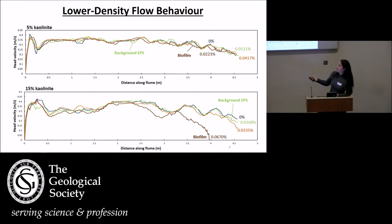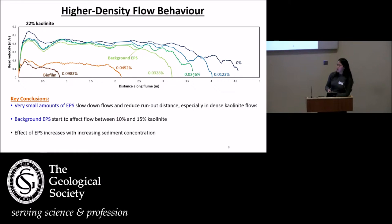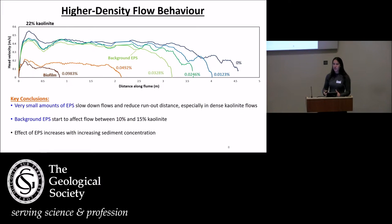For 15% kaolinite with a biofilm entrained in the flow, that flow actually deposited within the confines of the tank — all the others bounced off the end. For high-density kaolinite flows of 22%, that's where the effect of EPS starts to get very evident. For all the concentrations of EPS I added, the run-out distance of the flow decreased within the flume. Very small amounts of EPS are able to reduce the run-out distances of flows, and the effect of EPS gets stronger the more sediment you have in the flow.